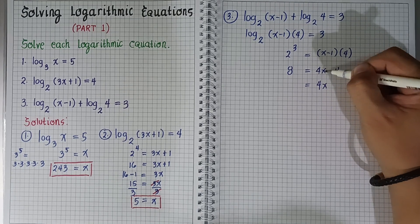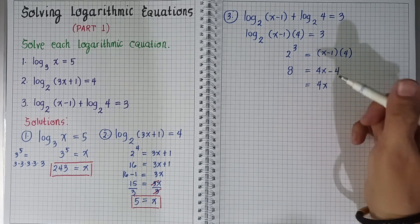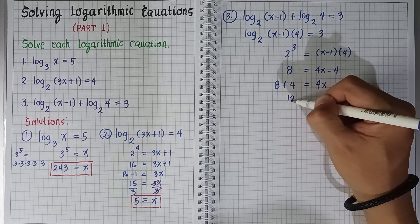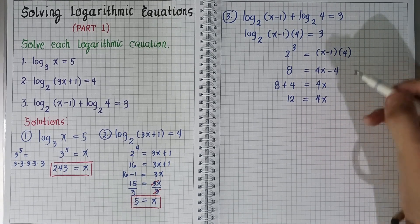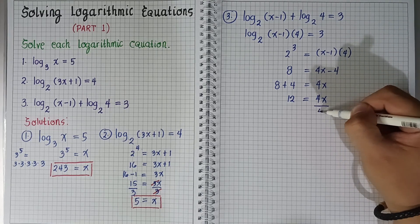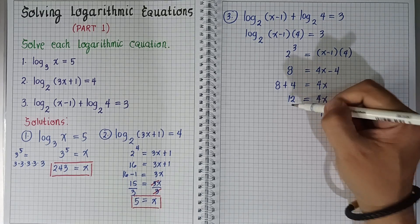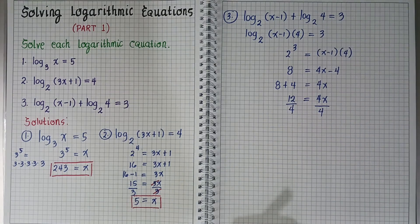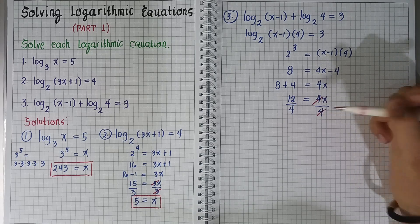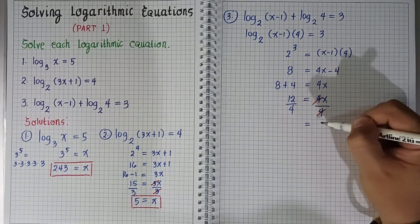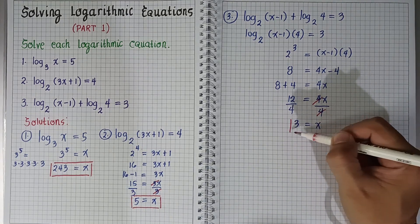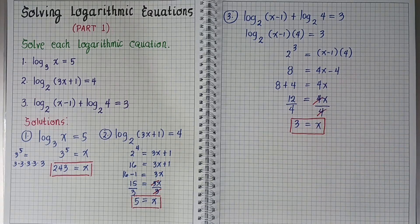Transposing negative 4 to the left side, it becomes positive 4. So 8 plus 4 equals 12, giving us 12 equals 4x. Solving for x, divide all terms by positive 4 — the numerical coefficient of x. Cancelling out, 12 divided by 4 equals 3. So x equals 3.